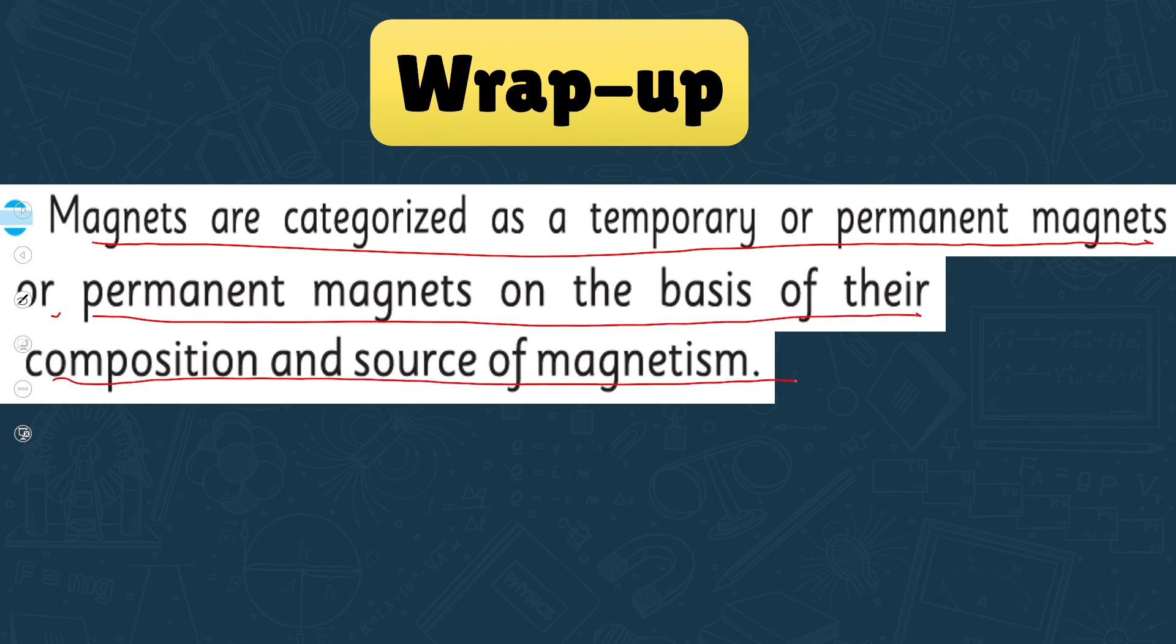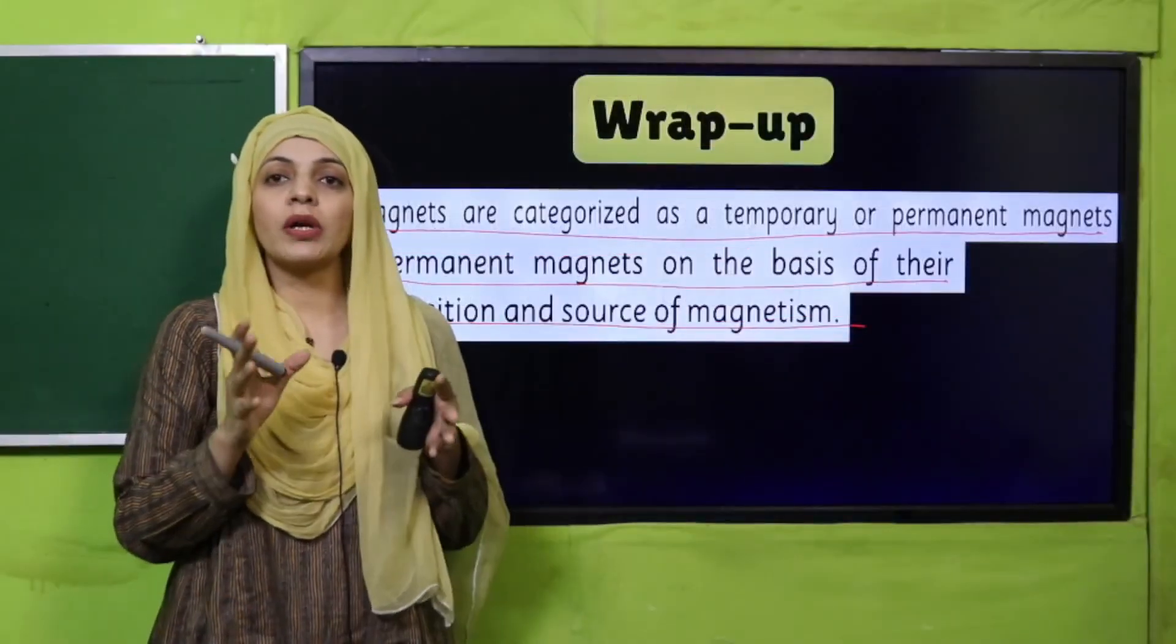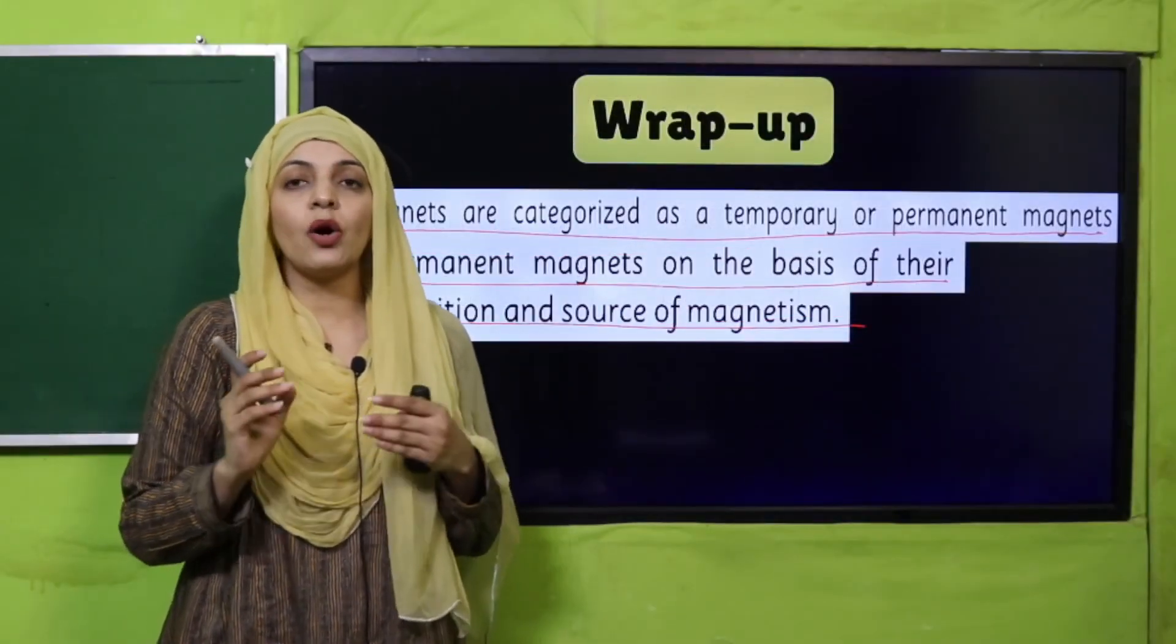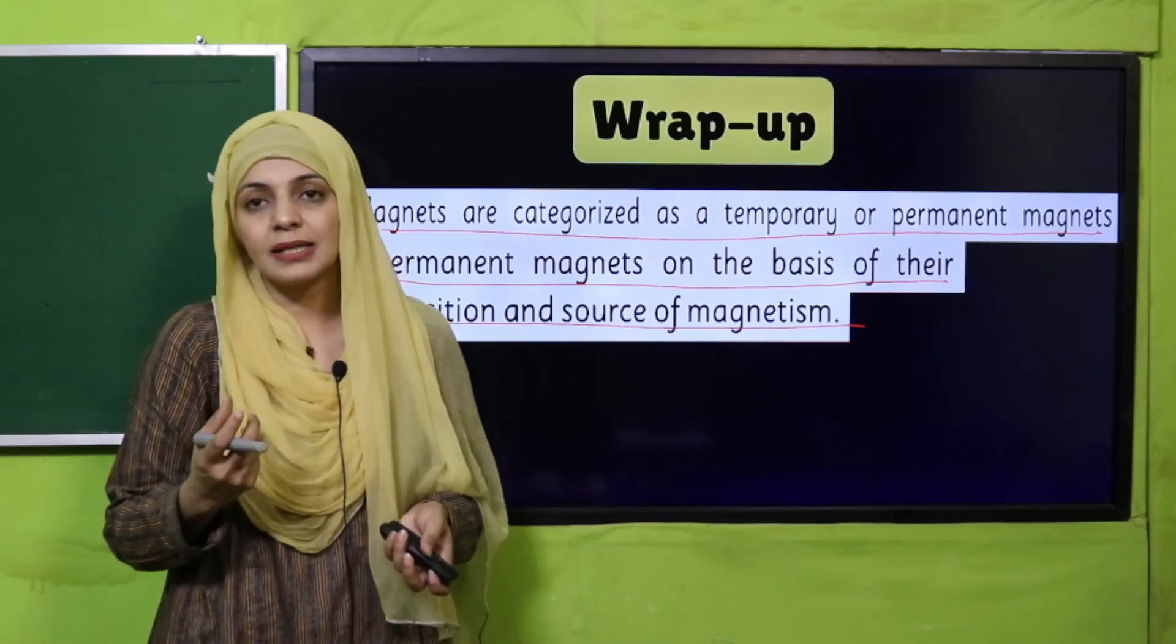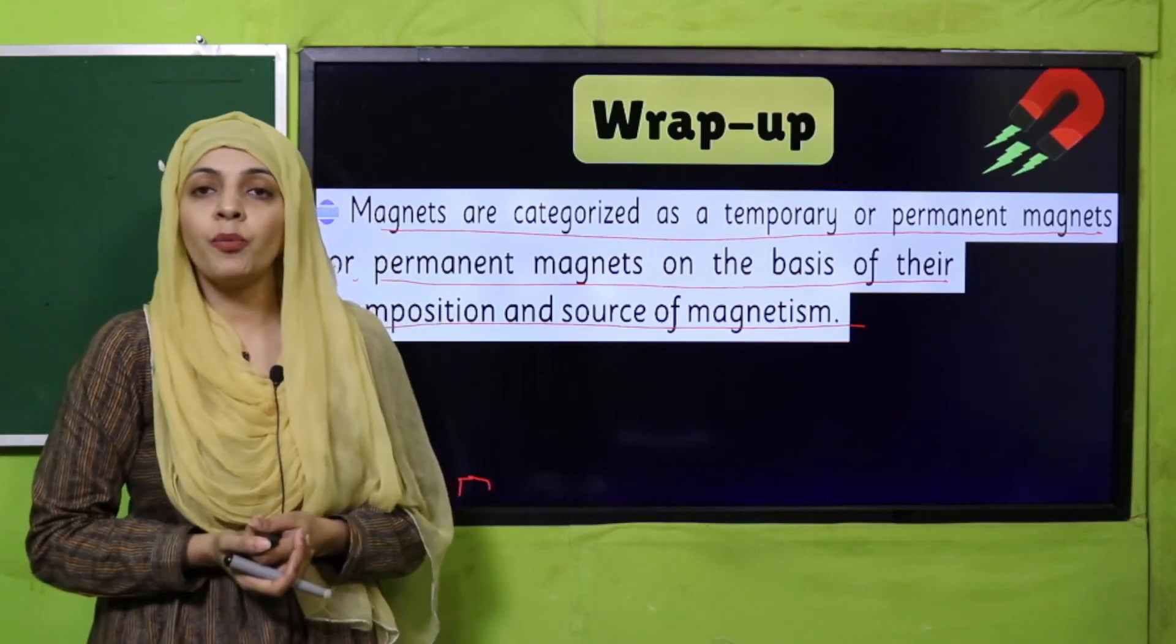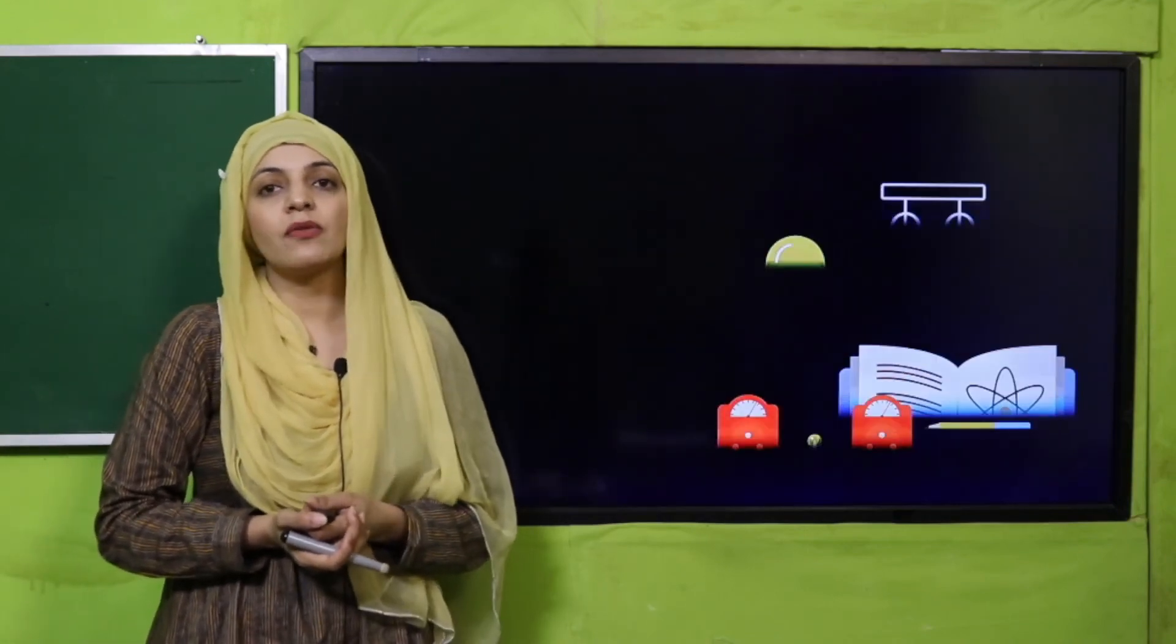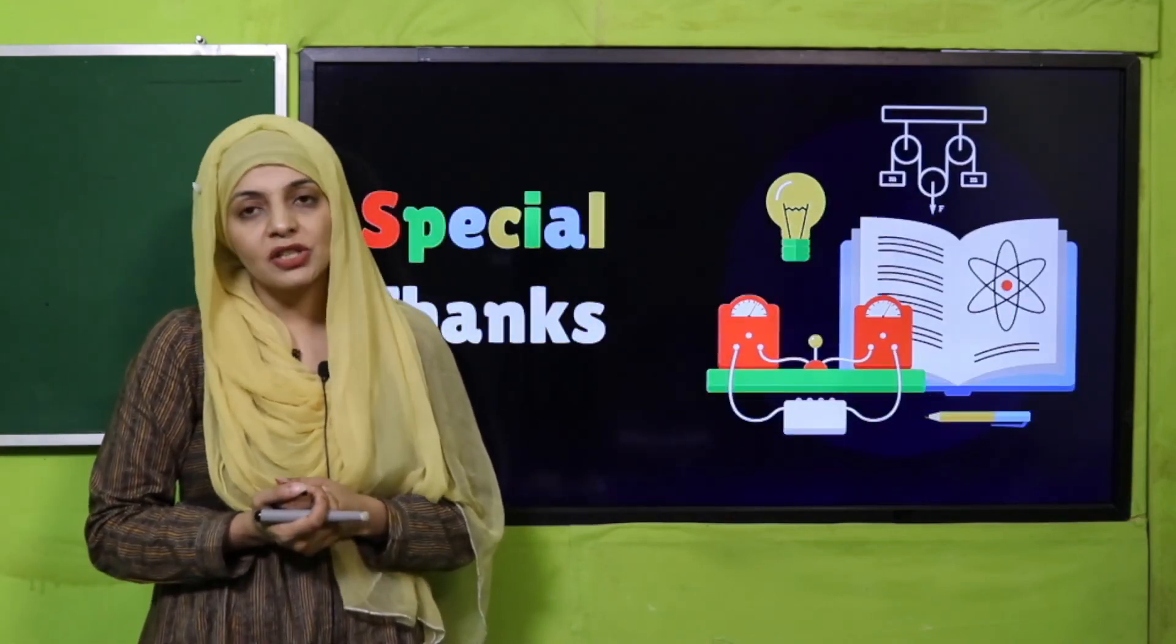Today we have discussed that magnets are categorized as temporary or permanent magnets on the basis of their composition and source of magnetism. So my dear students, we categorized magnets into permanent and temporary. How did we divide them? On the basis of their composition and on the basis of their magnetism. I hope you have enjoyed today's lecture. Keep everybody around you safe. Have a good day. Thank you so much and Allah Hafiz.